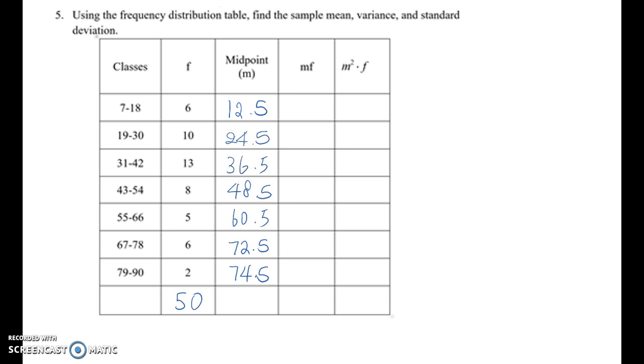After calculating all the midpoint, those are midpoint values: 24.5, 36.5, 48.5, 60.5, 72.5, and 74.5. And total frequency becomes 50.